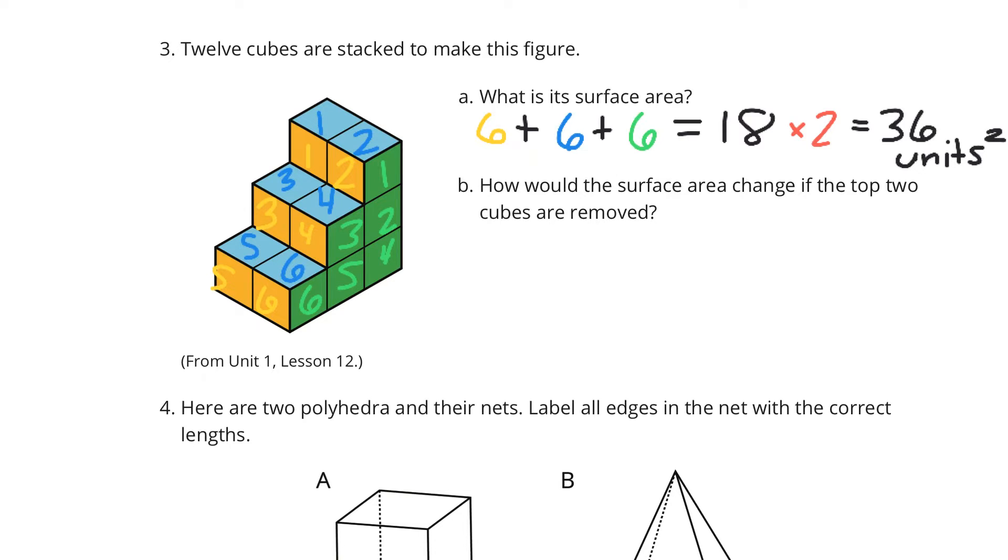And so as we look to remove the top two cubes, we can confidently say that we're going to be losing this side, this side, and this side. Now, we're still going to have those two top blues. Those are just going to be uncovered down here. And so we're losing three of what we can see, but we need to double that, so that means we're going to be removing six. So it's going to decrease by six square units.